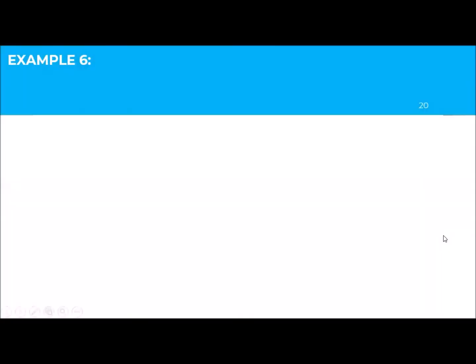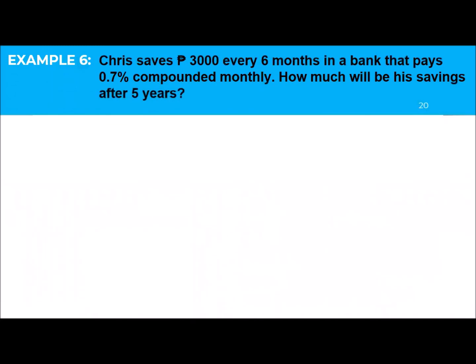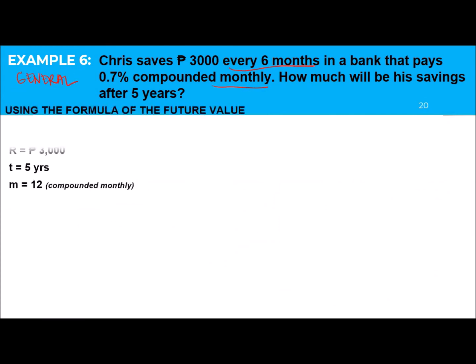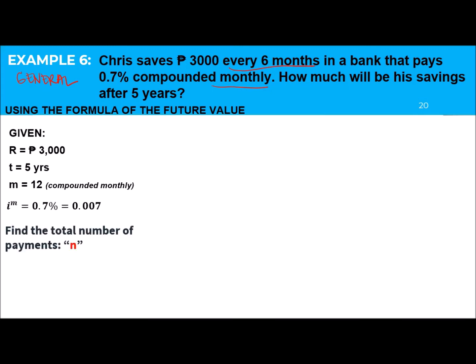Last example: Chris saves 3,000 pesos every 6 months in a bank that pays 0.7% compounded monthly. How much will be his savings after 5 years? He pays every 6 months but interest is compounded monthly — they are different, so this is a general annuity. Given: R equals 3,000; T equals 5 years; compounded monthly so M equals 12 for interest; interest rate is 0.7% or 0.007. For payments: every 6 months is semi-annual so M equals 2; N equals 2 times 5 equals 10.